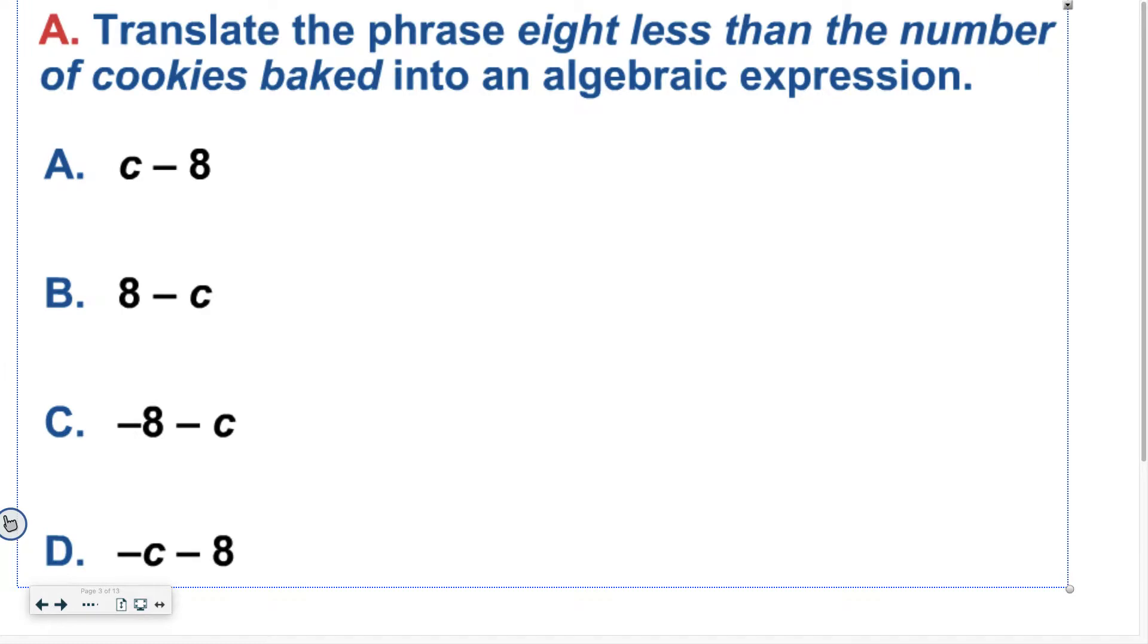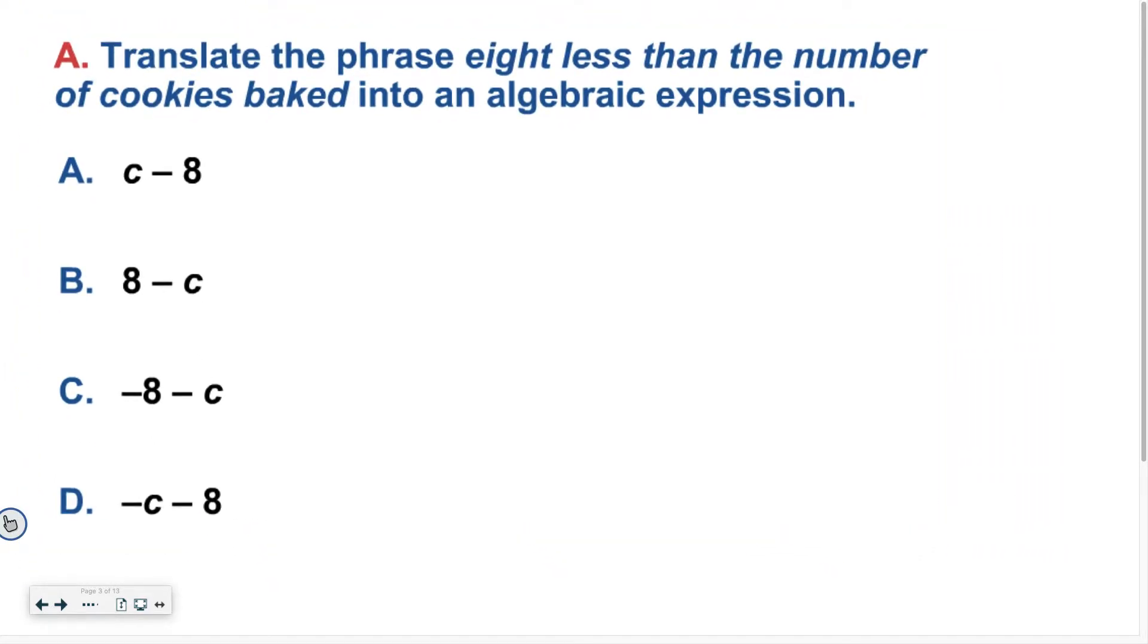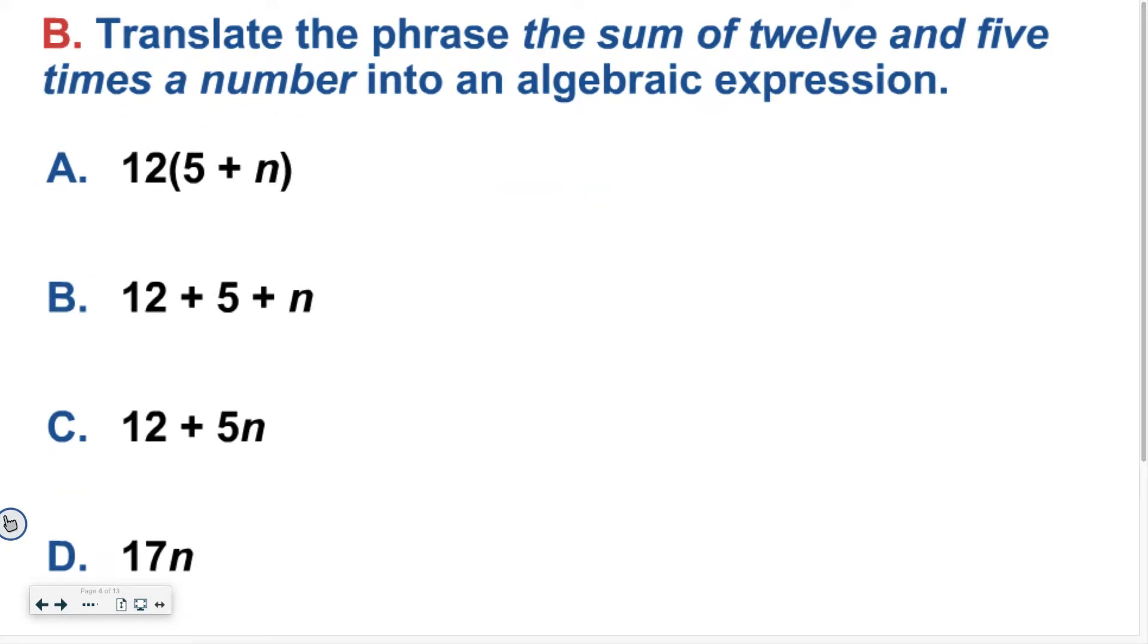So then on this example, I want you to translate the phrase eight less than the number of cookies baked into an algebraic expression. Good luck. Hopefully you said the sum meant you were adding. And then 12, you wrote down 12, and then five times the number is five. And then in this case, they used the letter N. If you put X or any other letter, that's also fine as long as it's in the same spot as that N. So 12 plus 5N would be your answer.